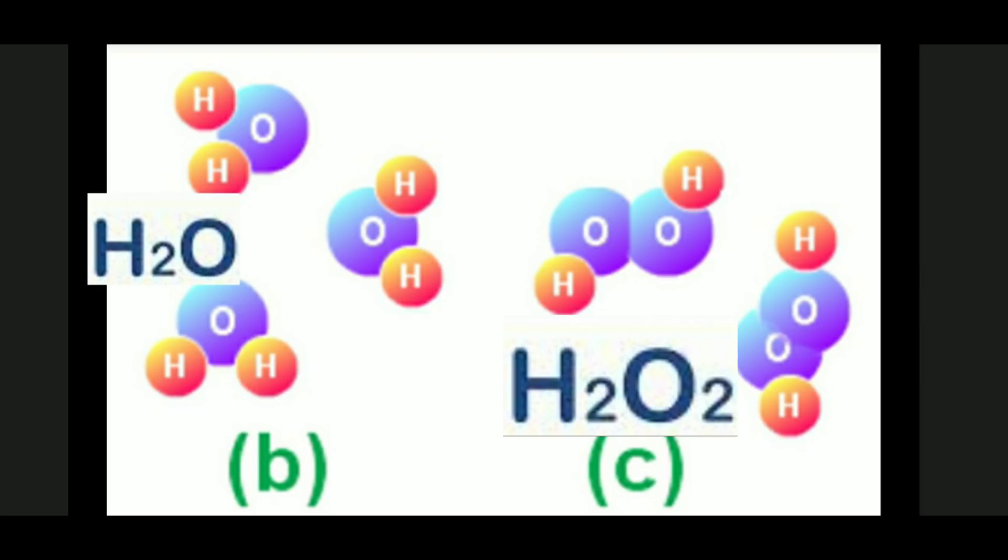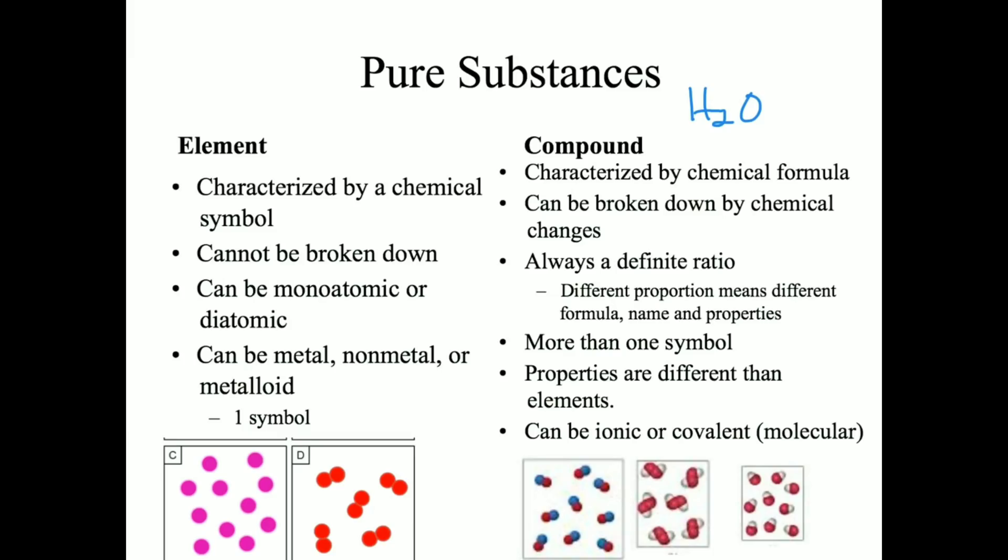Here is a review from lesson number seven, pure substances. Both water and hydrogen peroxide are compounds. Now, as we discussed earlier, compounds always have a definite ratio of elements. So water, which is really healthy for you, has the formula H2O. But hydrogen peroxide has the formula H2O2. So here we can see that a different proportion gives a different formula, a different name, and very different properties.